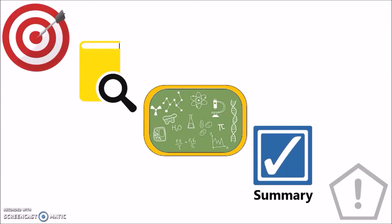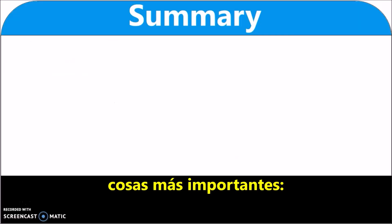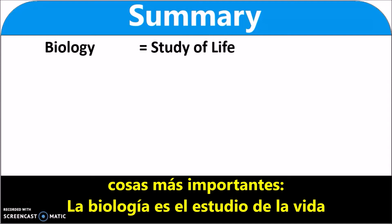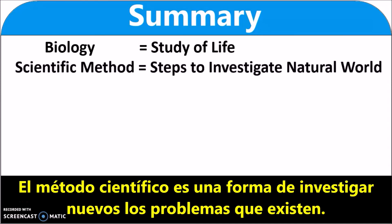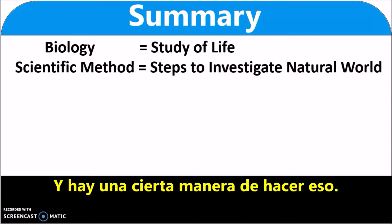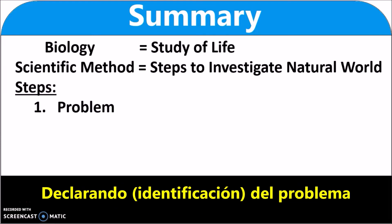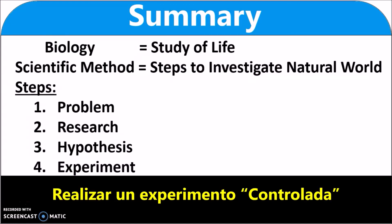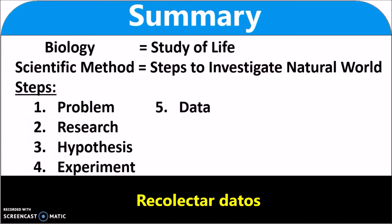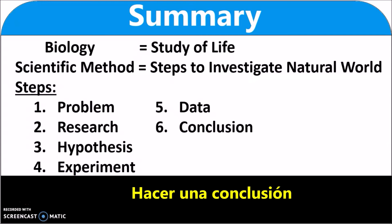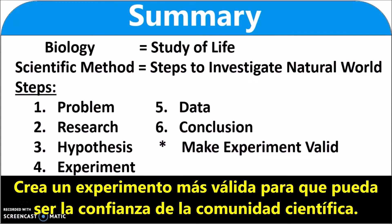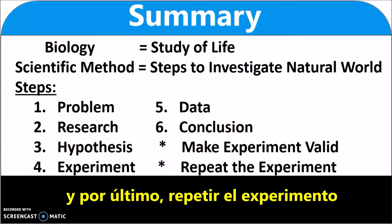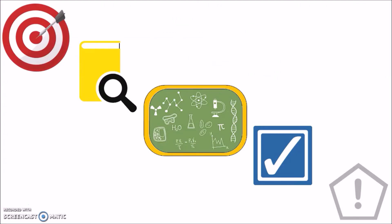Let's do a little summary of what we covered. Biology is the study of life. The scientific method is a way of investigating new problems in the world. The steps of the scientific method are: stating the problem, conducting research, making your hypothesis, performing a controlled experiment, collecting data, making a conclusion, making an experiment more valid so that it can be trusted by the scientific community, and last, repeating the experiment.